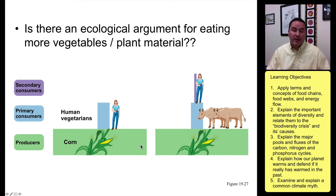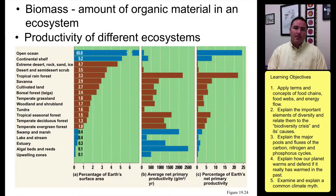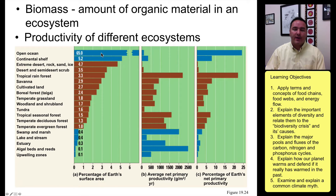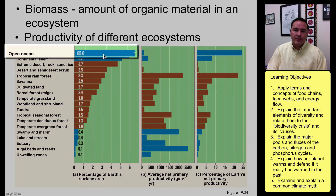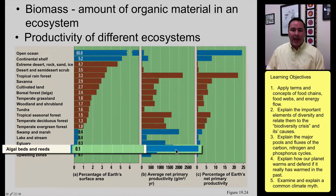There are actually strong ecological arguments for eating more vegetables and plant material than animal material. For example, you could feed far more humans on a plot of corn directly than if you took that same corn, fed it to cows, and then had humans eat the cows — you end up feeding far fewer people. Each community also has different ways of creating organic mass, which we call biomass. The most productive areas can be assessed by percentage of Earth's surface — most of Earth is open ocean.